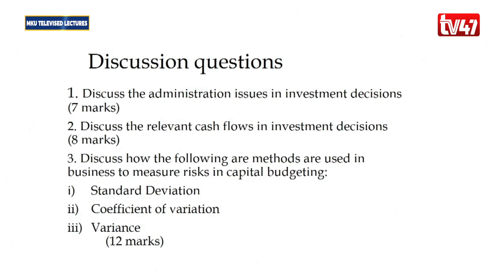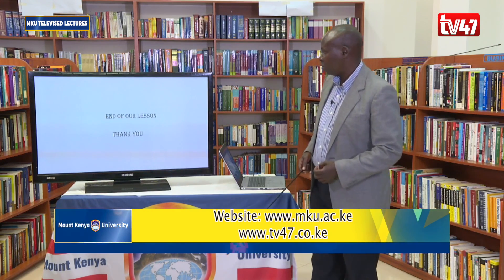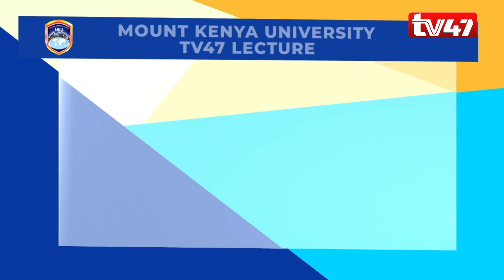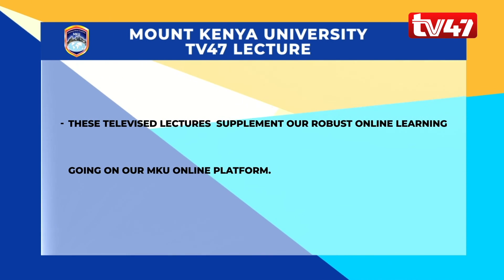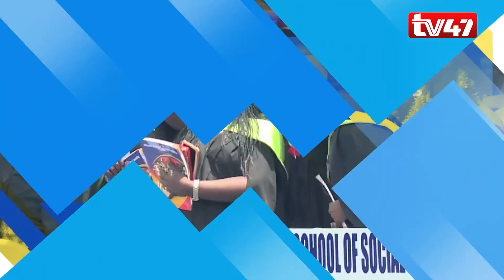Discussion questions for this topic include: discuss the administration issues in investment decisions; discuss relevant cash flows in investment decisions; and discuss how the following methods are used to measure risks in capital budgeting — standard deviation, coefficient of variation, and variance (worth 12 marks). That marks the end of today's lesson. These televised lectures supplement our robust online learning on the MKU online platform. Mount Kenya University is in a digital era.